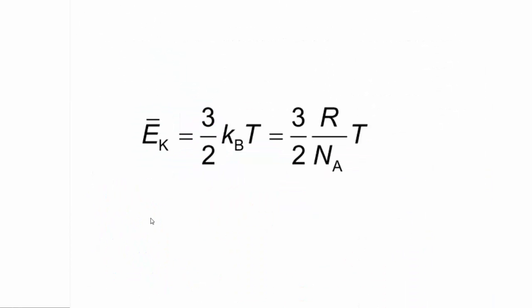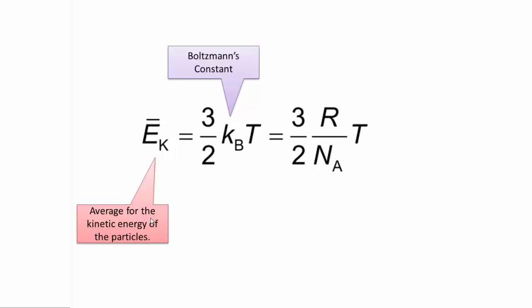Here we have the equation again as it's written in the data booklet. This is the average kinetic energy of the particles. This is Boltzmann's constant. Boltzmann's constant is 1.38 times 10 to the negative 23 joules per Kelvin.